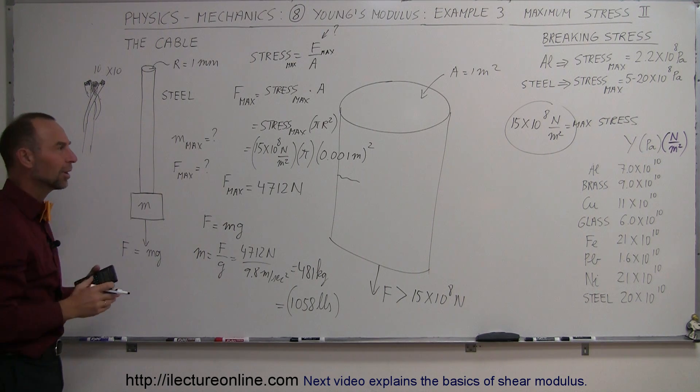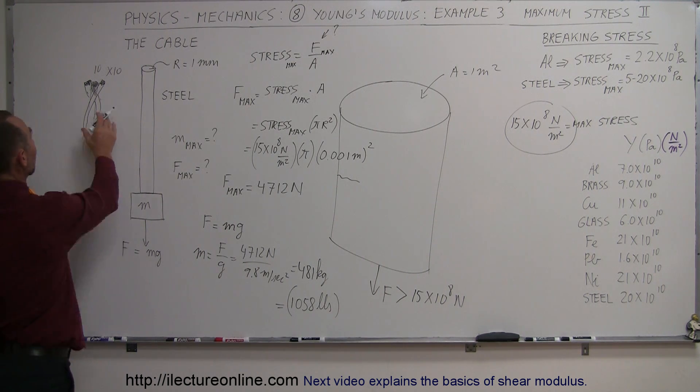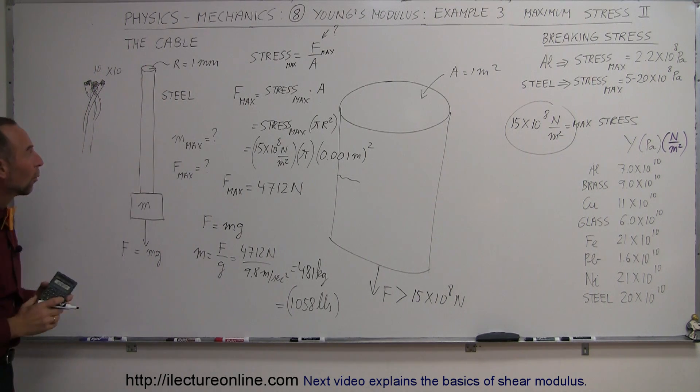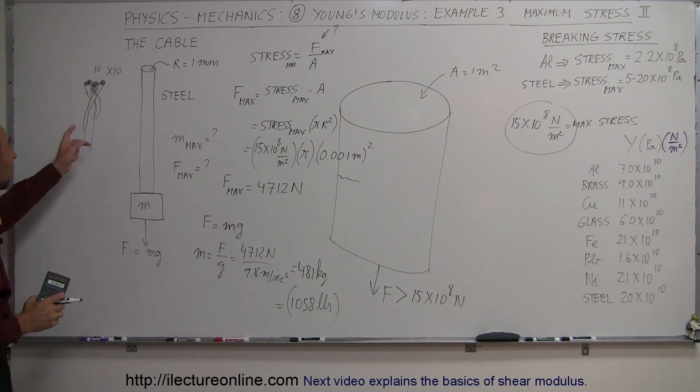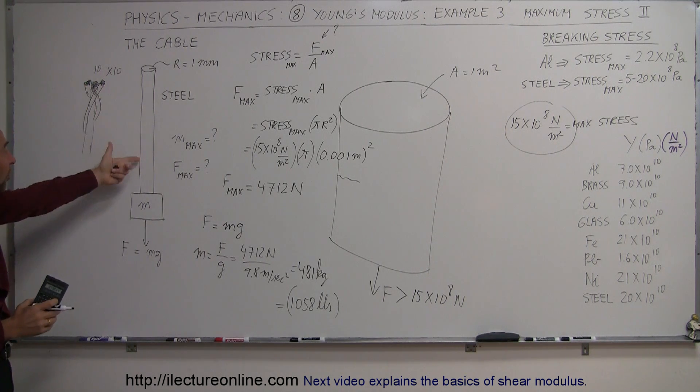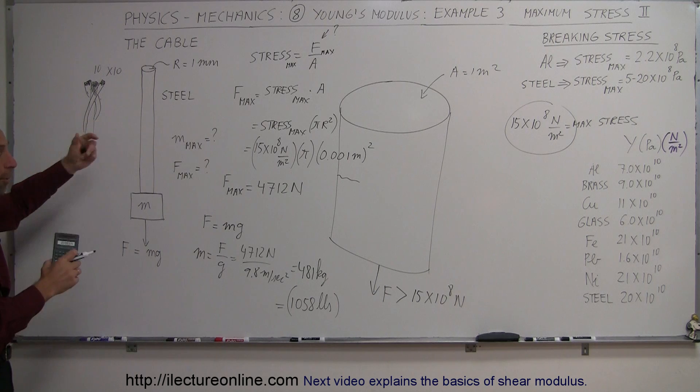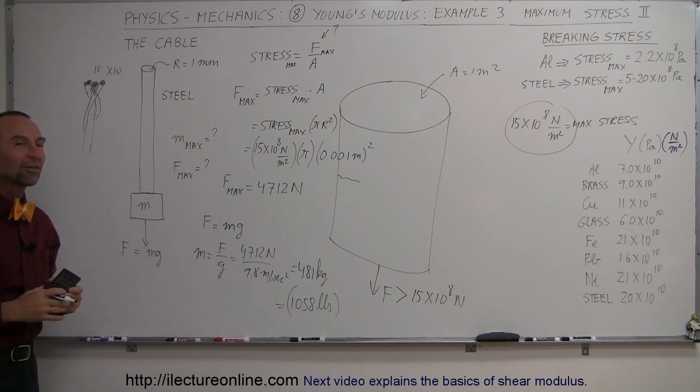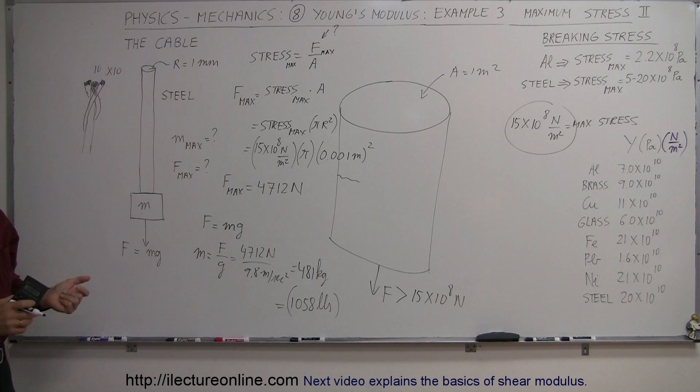And pretty soon you realize you can make some really strong cables by just bundling many, many of these small little wires together. So basically, the single strand like that would be kind of a single wire. You bundle them together, you bundle bundles, and sometimes they bundle those bundles into even much more massive and bigger cables that can hold millions of pounds.